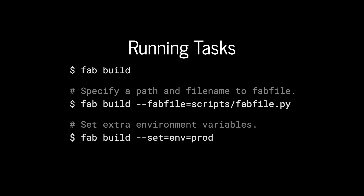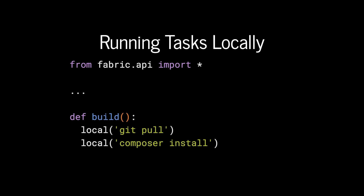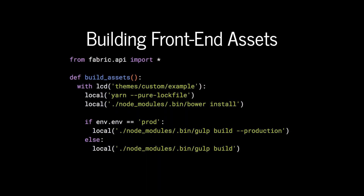We don't always want to run Git and Composer on the remote server, so we can run tasks locally using the 'local' keyword. These will run on the host machine rather than remotely. Another thing I tend to do is build front-end assets — this example is taken from my Drupal themes. There's a task called build_assets. We use 'lcd', which is local change directory, to go into our theme directory and then run yarn to install npm dependencies and bower to install all front-end dependencies.